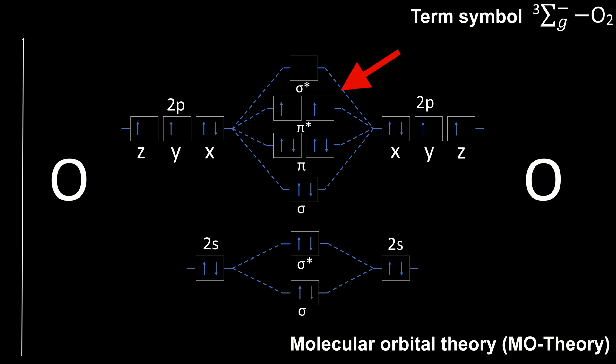Both of the antibonding pi electrons have the same spin, which leads to this being the triplet state. Due to the Pauli exclusion principle, the electrons with same spin are distributed in two orbitals and not put in the same. This is the ground state of oxygen, also called triplet oxygen.